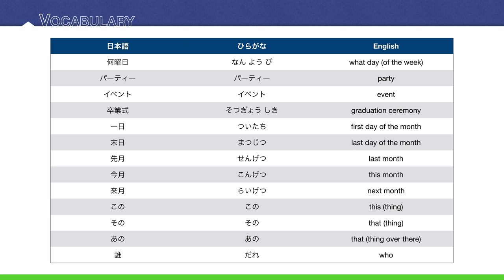At the top, we have: What day of the week? Party. An event. A graduation ceremony. The first day of the month. The last day of the month. Last month, this month, and next month — respectively. This thing, that thing, and that thing over there — respectively. And finally, the question word: Who?